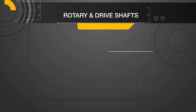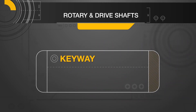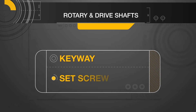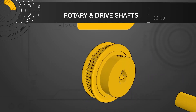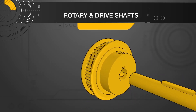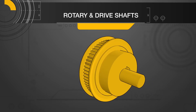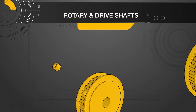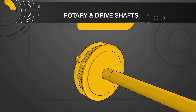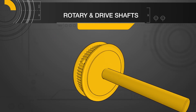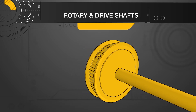The shafts are mounted onto the pulley in a variety of ways, such as a keyway or set screw. For the keyway design, the rotary shaft must be designed with a keyway slot to match that of the pulleys. For the set screw design, the rotary shaft will have a set screw flat so that the screw from the pulley can tighten onto it.